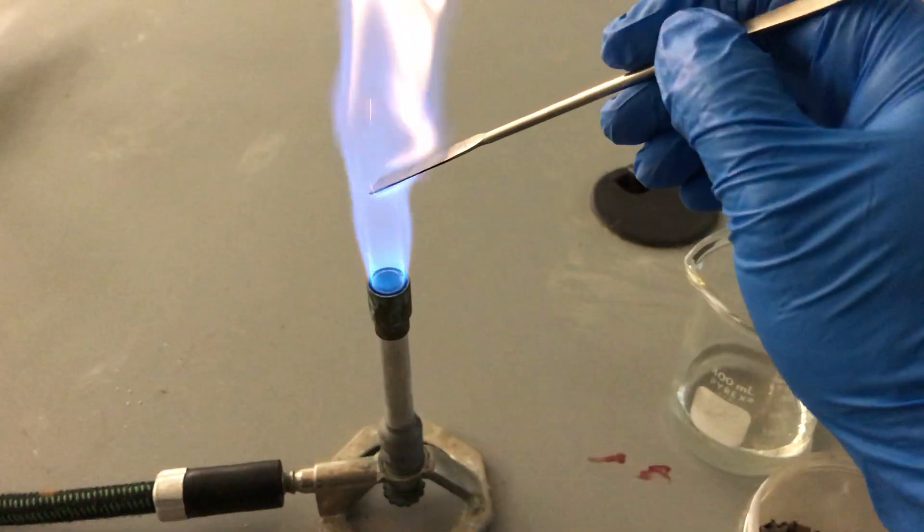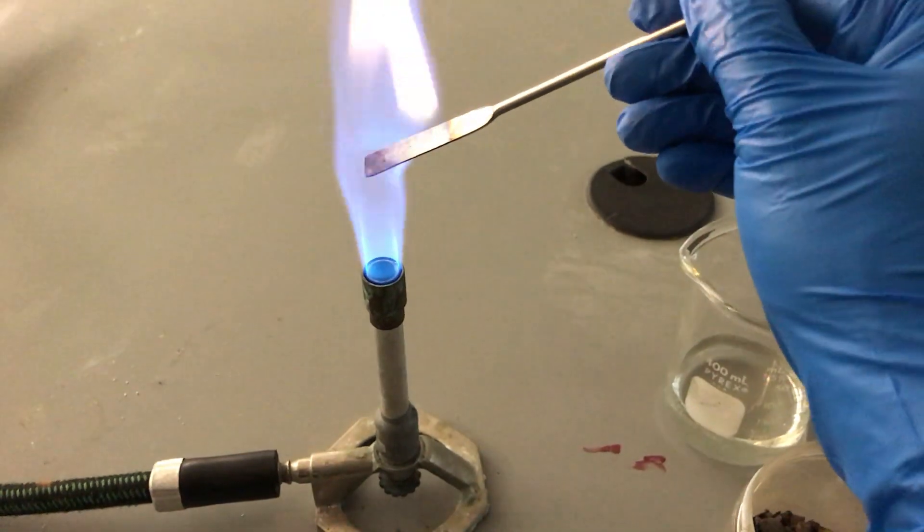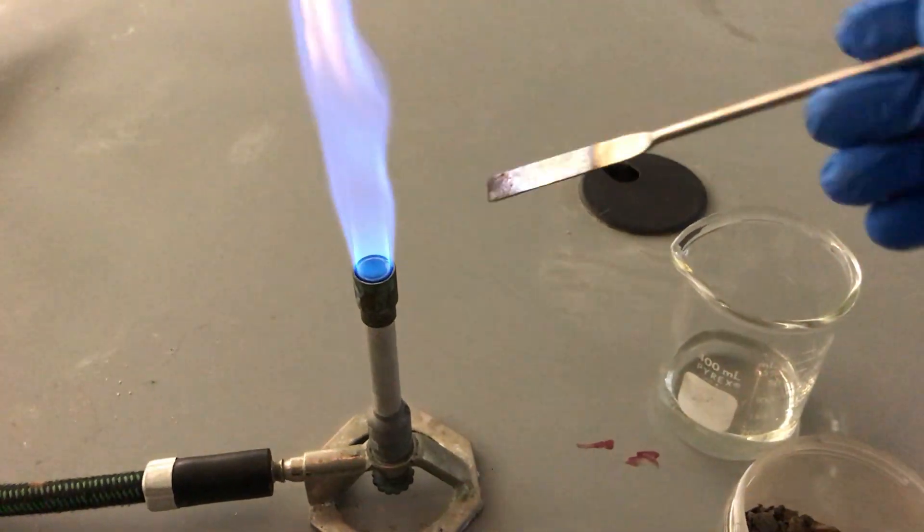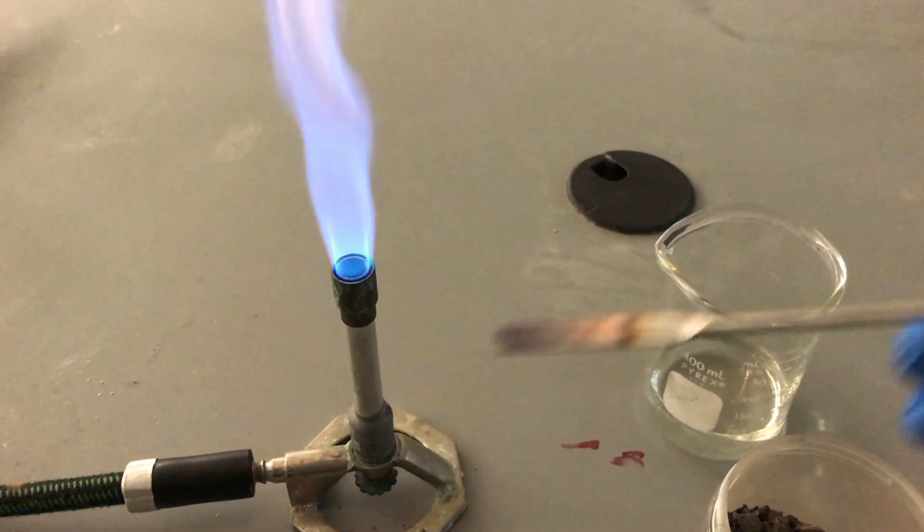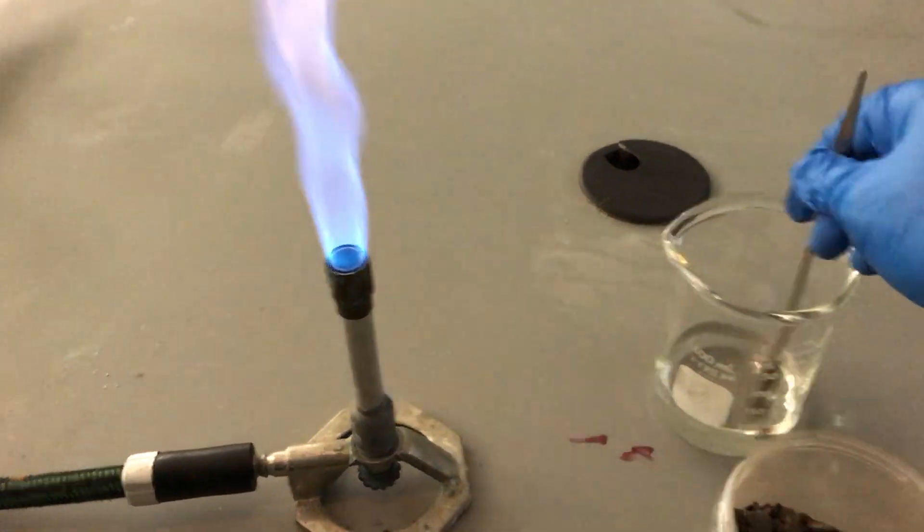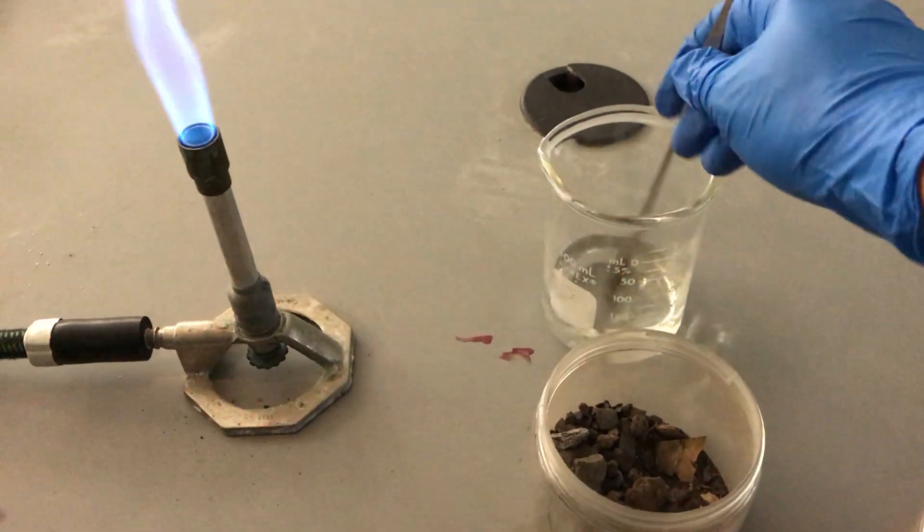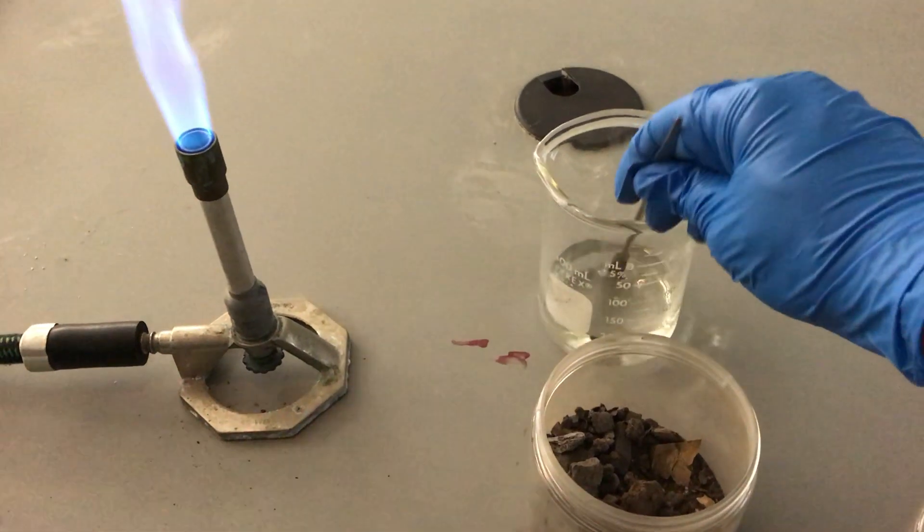But one thing we know for sure is that our crime scene sample has both orange color and sparkles in the sample. We're going to reintroduce this to the nitric acid, swirl it around a bit, get any contamination off.